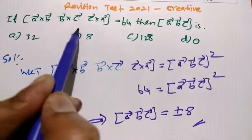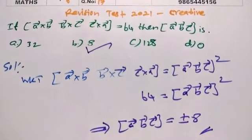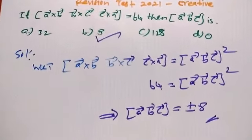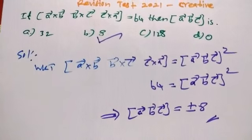So the answer is box A B C equals plus or minus 8. Option B is the best option. Thanks for watching, thank you very much.